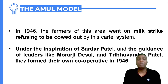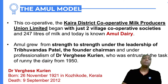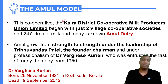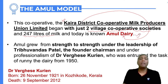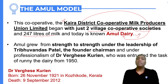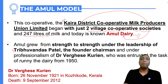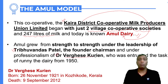The root of the Amul model started from 1946. The first cooperative formed was the Kaira District Cooperative Milk Producers Union Limited. This cooperative started with the help of only two village cooperative societies and only 247 liters of milk. That cooperative has since been transformed into Amul Dairy. It grew under the leadership of Trivandas Patel, who was its founder chairman.